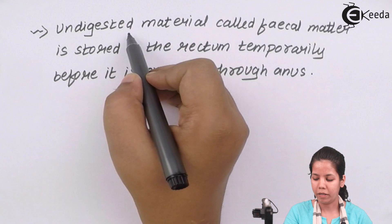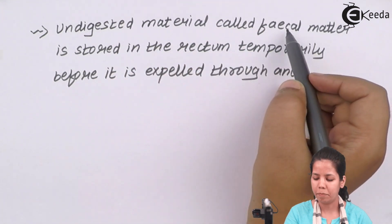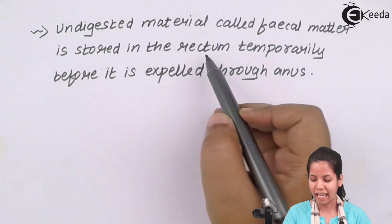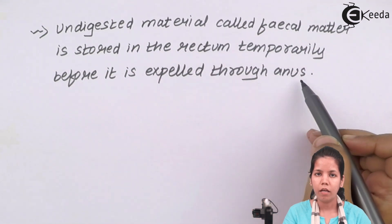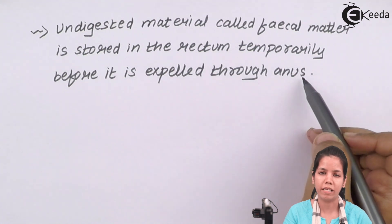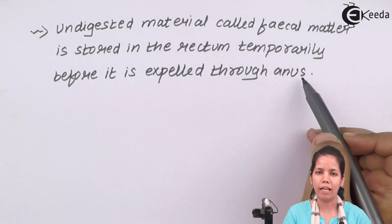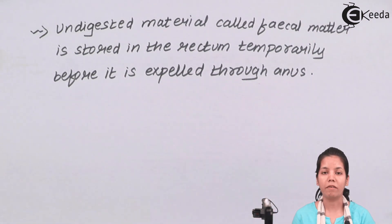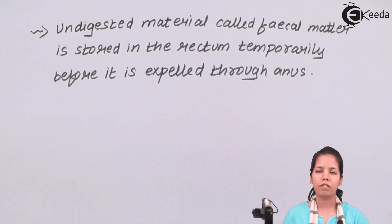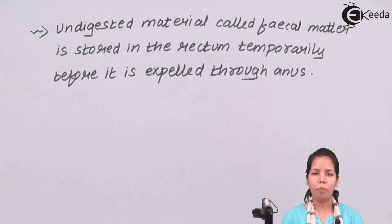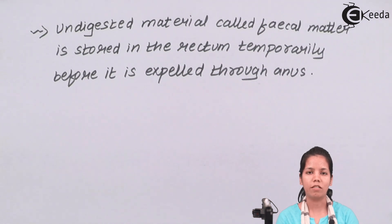Undigested food material, called fecal matter, is stored in the rectum temporarily before it is expelled through the anus. The Large Intestine is supported by the Small Intestine present in the stomach, and together they help to remove fecal matter and undigested food products. In this part of the chapter, we have studied the various parts and structure of the Large Intestine. I hope you are all clear about this concept.